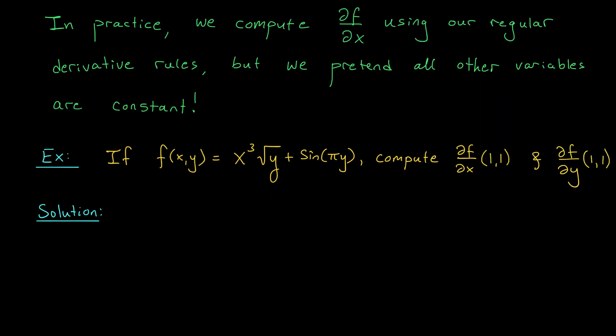Now let's check out some examples. We've introduced the notion of a partial derivative with respect to x or y, but how do you actually go about computing these things? You could use the limit definition from the previous slide, but just like in Calc 1, the limit definition of the derivative is pretty bulky and not very efficient. In Calc 1, you pretty quickly abandoned the limit definition in favor of all your fancy derivative rules. We're going to do something similar in Calc 3. Remember: a partial derivative is just a regular derivative, but you treat all the other variables like constants.